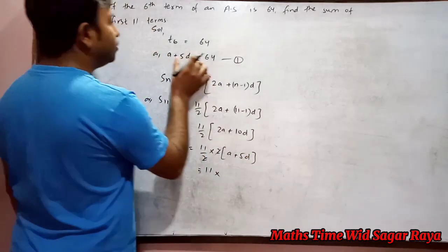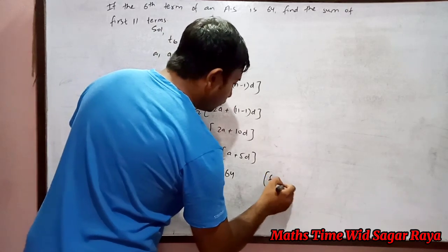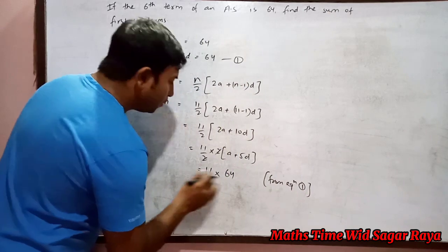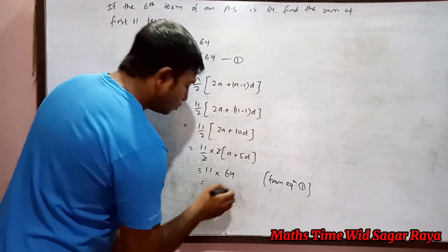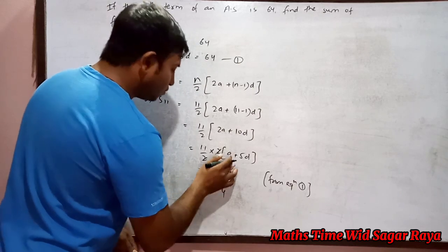So a plus 5d equals to 64 from equation 1, so 11 into 64. 11 times 4 is 44 carry 4, 11 times 6 is 66 plus 4 is 70, so 704 is the answer.